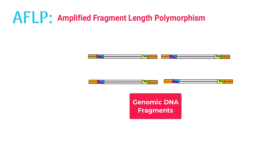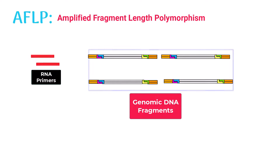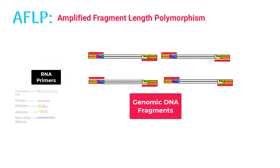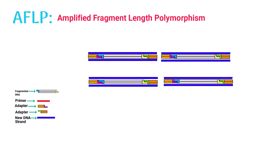In the next step, these DNA fragments are amplified in PCR. In amplification, two distinct primers are added to each DNA fragment. These primers are specific and complementary to the adapters. The amplification produces large numbers of new DNA fragments.